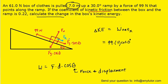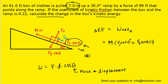Next we determine the work done by the Fg sine theta force and add it to our net work expression. We take the force Fg sine theta, multiply it by the distance of 7 meters, then multiply by the cosine of the angle. Since Fg sine theta points down the ramp and the displacement points up the ramp, the angle between them is 180 degrees, so we multiply by the cosine of 180.